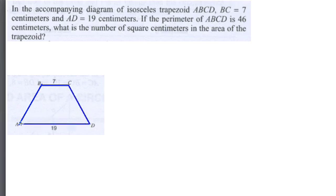this is our isosceles trapezoid, and isosceles refers to two equal sides. Now BC is 7, and AD is 19. So this means, of course, that those two sides are not equal, which means these two sides are equal, whatever they are.